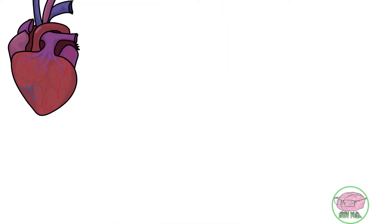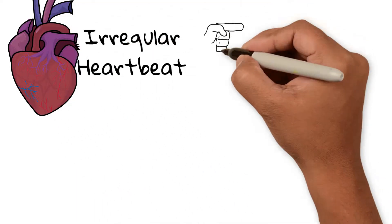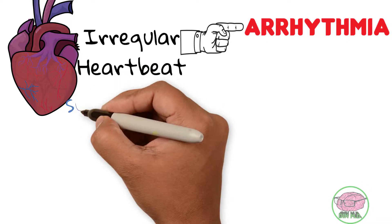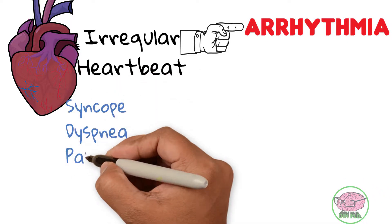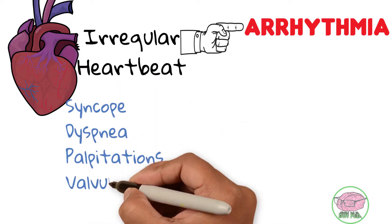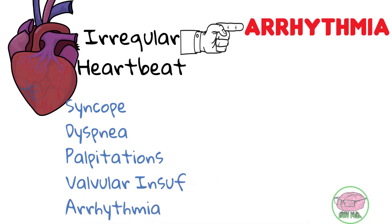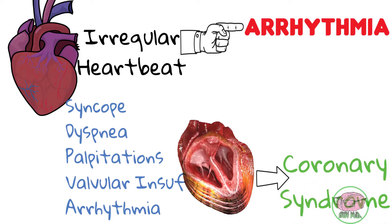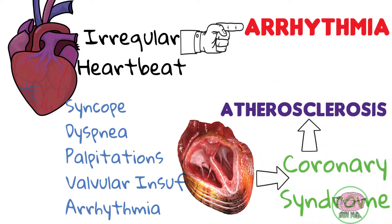Juan's heartbeat is irregular, known as arrhythmia. In conjunction, the syncope, dyspnea, palpitations, valve insufficiency, and arrhythmias point us towards a heart problem. Because of his age, coronary artery disease is likely. This is when fats and cholesterol start to accumulate in the wall of the vessels, known as atherosclerosis, and can lead to a heart attack.